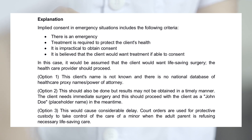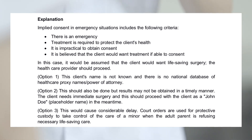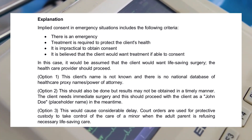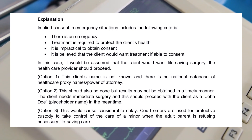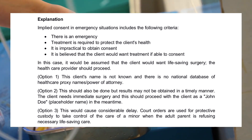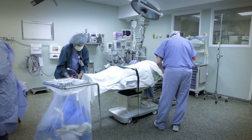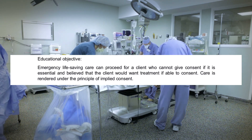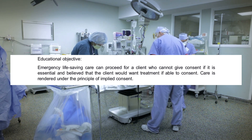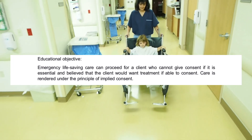Option 1: This client's name is not known and there is no national database of healthcare proxy names or power of attorney. Option 2: This should also be done, but results may not be obtained in a timely manner. The client needs immediate surgery and this should proceed with the client as a John Doe placeholder name in the meantime. Option 3: This would cause considerable delay. Court orders are used for protective custody to take control of the care of a minor when the adult parent is refusing necessary life-saving care. Educational objective: Emergency life-saving care can proceed for a client who cannot give consent if it is essential and believed that the client would want treatment if able to consent. Care is rendered under the principle of implied consent.